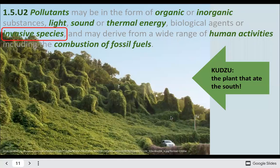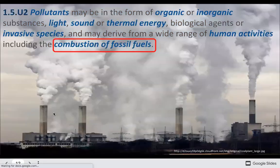Of course, we know a lot about invasive species. Kudzu is a vine that has spread incredibly abundantly over the south. Out here we have things like Russian thistle, tumbleweed, and deadly nightshade. And of course, burning fossil fuels makes a lot of pollution.